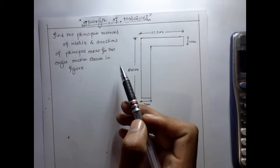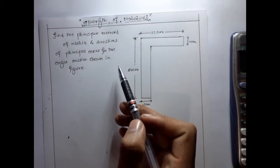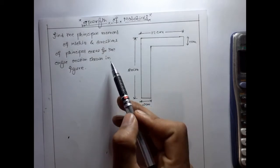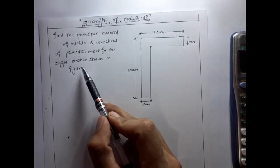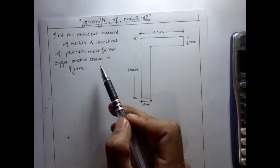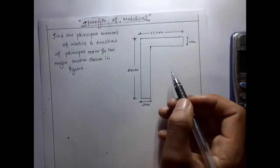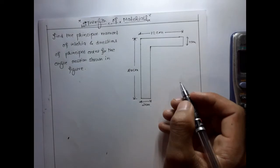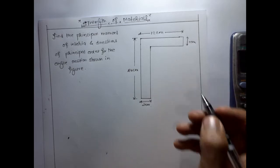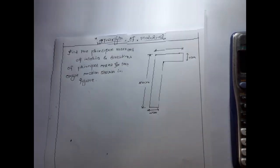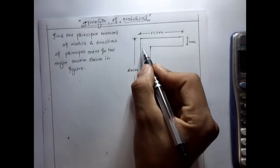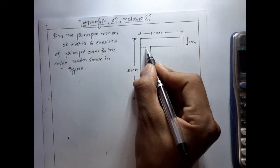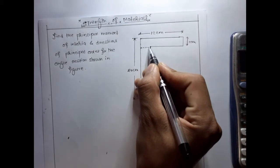We have a problem: find the principal moment of inertia and direction of the principal axis for the angle section shown in the figure. So we need to find the principal moment of inertia and principal axis direction.